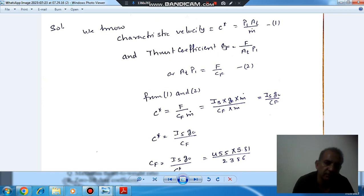And thrust coefficient is Cf equals F by AT P1. F is your thrust, AT is again throat area, and P1 is combustion chamber pressure.